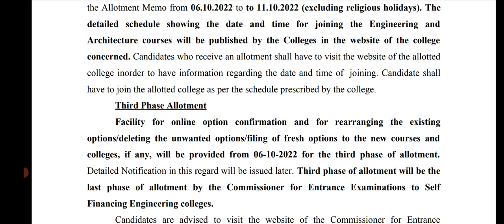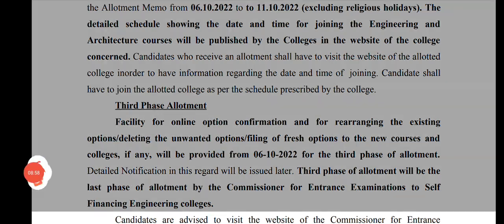The third phase allotment is the last allotment. There are 12 government engineering colleges and government-aided engineering colleges involved. So if you have a chance to go to the third allotment, keep your options ready. Stay with the channel - it's for you, not for me. Mr. Engineer signing off.